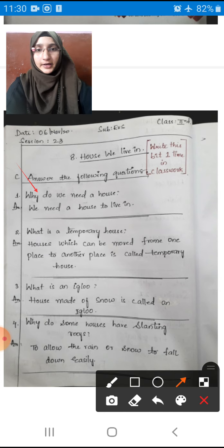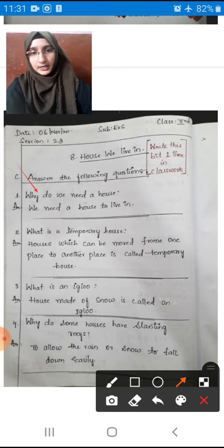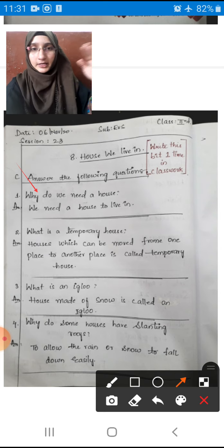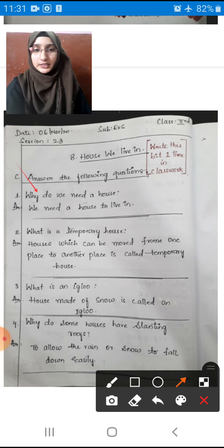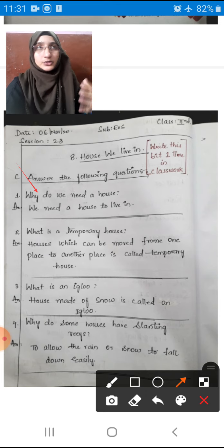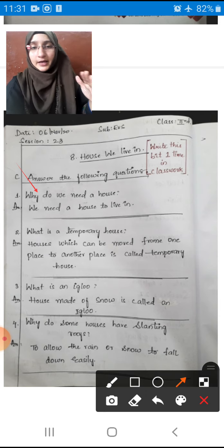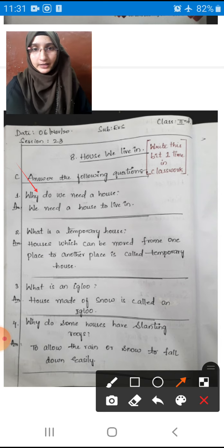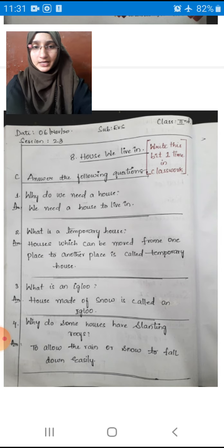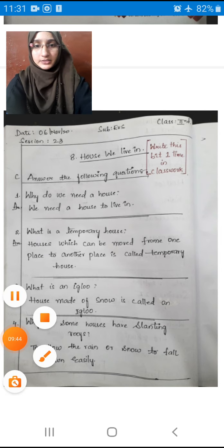What is an igloo? House made of snow is called an igloo. Why do some houses have slanting roofs? The roofs are slightly tilted in slanting position. Houses have slanting roofs to allow the rain or snow to fall down easily. The rain or snow that falls on the roof doesn't accumulate and damage the roof. They make slanting roofs so water or snow easily goes to the ground. So these are the four answers which you have to write one time in your classwork children.